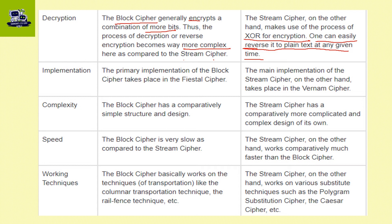Implementation: the primary implementation of block cipher takes place in the Feistel cipher. The main implementation of stream cipher, on the other hand, takes place in the Vernam cipher.